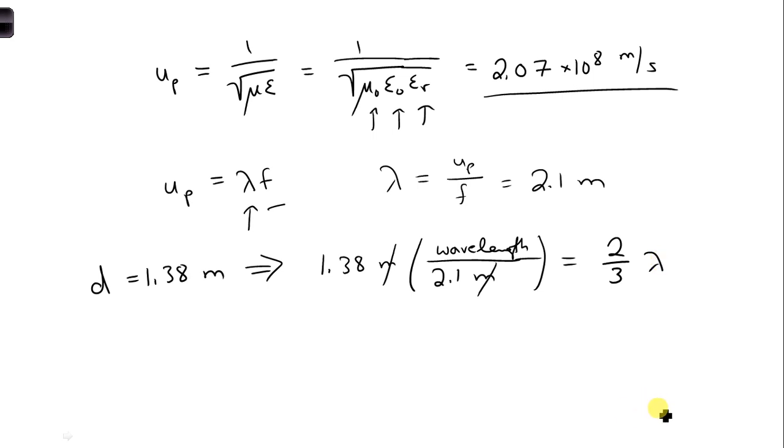So that is more than half a wavelength. If you notice on the Smith chart, if you go all the way around the Smith chart, that is half of a wavelength. So that means we can rotate all the way around the Smith chart. But all we're really going to see at the end is the distance that we've rotated, which is 2 lambda over 3 minus lambda over 2. So that's the amount we actually need to rotate to get our final answer.